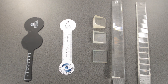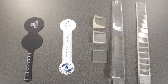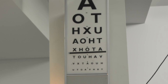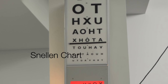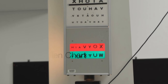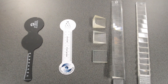The occluder is used to ensure the patient is dissociated during the test. The fixation target is used at near to ensure the patient is accommodating. A Snellen chart can also be used as fixation for distance testing.